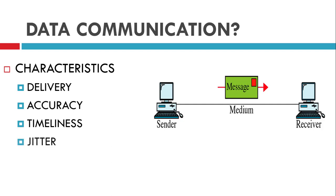The last characteristic is jitter. Jitter is the difference in time between receiving two successive messages. For example, you are passing some audio and video to your friend — the first audio and video is received in 30ms and the second in 40ms, so there is a gap of 10ms between them. That gap is called jitter. Because of this gap, the quality of the audio and video will be degraded, and that must not happen. So for effective data communication, these are the four characteristics: delivery, accuracy, timeliness, and jitter.